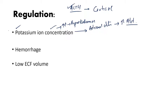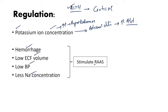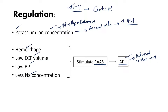The second group of regulators includes hemorrhage, low extracellular fluid volume, low blood pressure, and less sodium concentration. All of them can also stimulate the adrenal cortex and increase aldosterone secretion. However, these are not going to directly stimulate the adrenal cortex; instead they stimulate the renin-angiotensin-aldosterone system. Once this system is stimulated, it increases the secretion of angiotensin 2, which then acts on the adrenal cortex to cause an increase in the secretion of aldosterone. So all these factors indirectly act on the adrenal gland to increase aldosterone secretion.